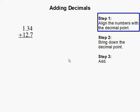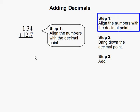Step 1: Align the numbers with the decimal point. So we're going to align the decimal point right here. And only when the decimal point is aligned can we then add our decimals.